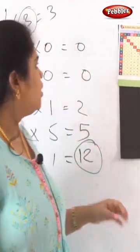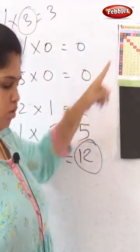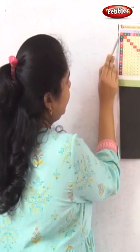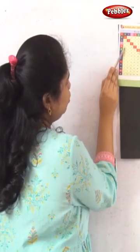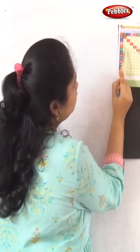Okay, so next we are moving to the third table. I am just wrapping it. 3 into 0, third table.